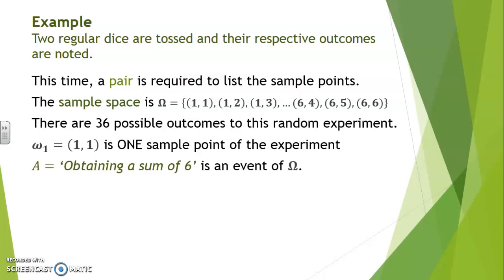A, obtaining a sum of 6, is an event. It consists of a subset of outcomes of omega. In listed form, A would be obtained from the combinations: